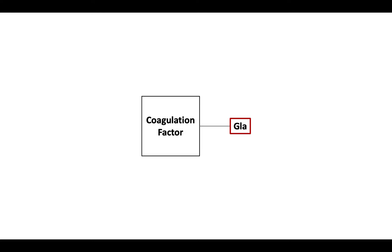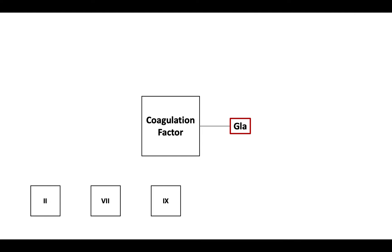Vitamin K-dependent factors include 2, 7, 9, and 10, and the natural anticoagulants protein C and protein S.